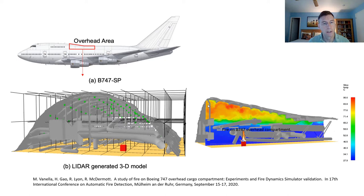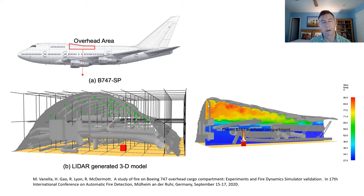Here's an example of some work that Marcos has done with the Federal Aviation Administration, looking at smoke detector testing within the fuselage of a 747. You can see how you could really look at a very complicated domain using this technique. But generating this domain takes a fair amount of effort, even if you're using software like PyroSim, Blender, or Autodesk Inventor, which will allow you to output manifold geometry.